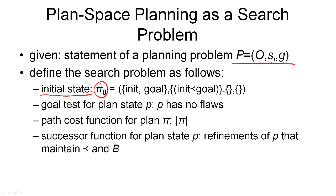We have no variable bindings and no causal links initially. The goal test, as we have just seen, is simply to check whether a plan has flaws. If it has no flaws, then our plan is a solution state. What I haven't mentioned so far is the path cost function. That's simply because the path cost function is not very relevant here — you can choose pretty much anything you like, for example, the length of the plan as usual. Note that this path cost function would not be related to the cost of the plan refinement operations, but to the cost of the plan that we're searching for.